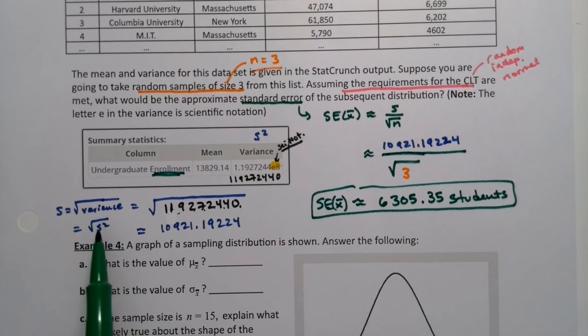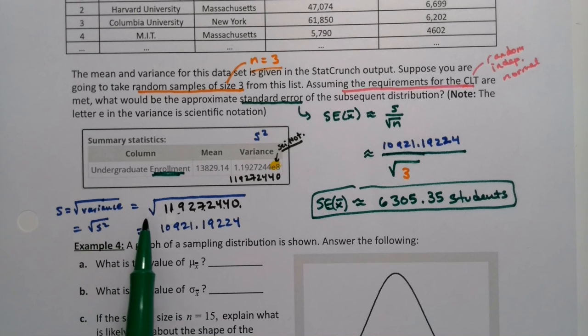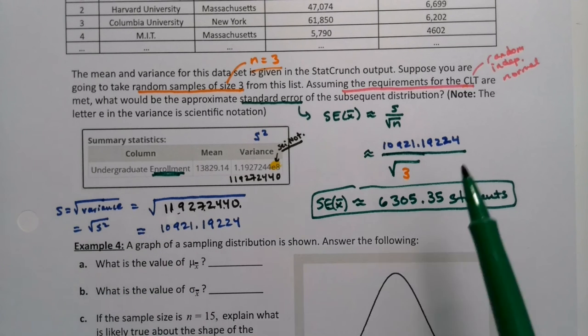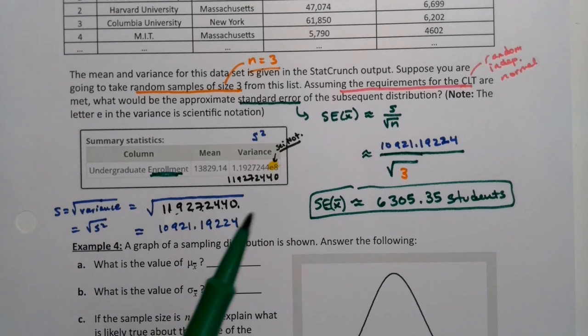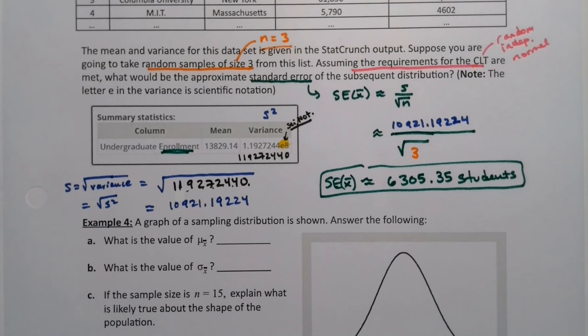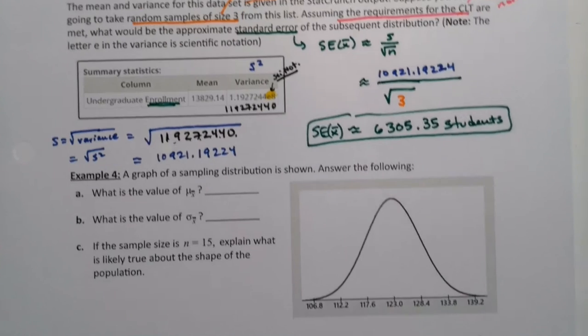So that was kind of fun. It reminded us a bit about variance and standard deviation and the relationship between the two from chapter three, and then we're able to use that. It also reminded us about scientific notation. StatCrunch does scientific notation with a lowercase e, which is very unusual. It's usually a capital E for computer programs, but that's how they programmed it.